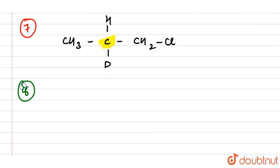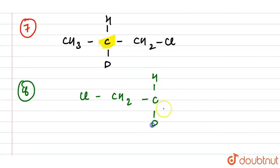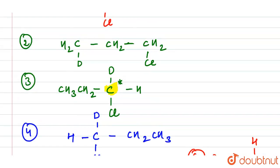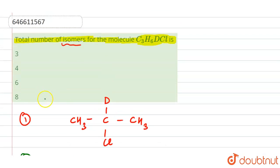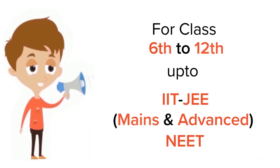The eighth structure has Cl–CH₂–CH with D and CH₃ attached. In total, we have eight isomers for the given molecule C₃H₆DCl. So our final answer is eight.